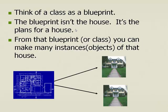Think of a blueprint for a house. Right here we have a blueprint, and is a blueprint a house? Well, no — it's not an actual house, it's the plans for a house. Using a blueprint, you can create as many houses as you want from that same blueprint. But the blueprint is not the house, it's just the plans for a house. Well, a class is the same thing. The class is not the actual object — the class is the blueprint for the object. And using the class, you can have multiple objects. So think of a class as a blueprint.